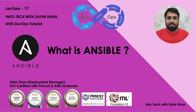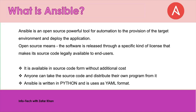What is Ansible? Ansible is an open source powerful tool for automation to provision the target environment and deploy the application. Open source means the software is released through a specific kind of license that makes its source code legally available to end users. It is available in source code form without additional cost. It doesn't mean that executable software is given away for free — it means that source code is available for free. Users can view the code and make any kind of changes to it, and anyone can take the source code and distribute their own program from it.